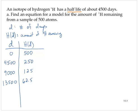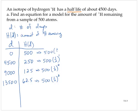Notice that to get the 250, I took the 500 and multiplied it by one-half. And to get to 125, I multiplied by one-half again. Remember that 250 was simply 500 times one-half, so 125 is 500 times one-half times one-half, or one-half squared. Similarly, 62.5 is 500 times one-half cubed. And one-half to the first is one-half, and 500 fits as 500 times one-half to the zero.